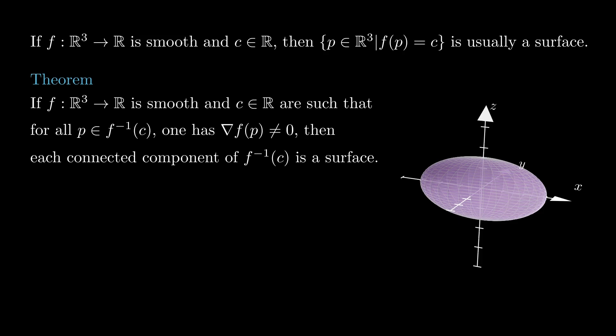then each connected component of the level set of f corresponding to c is a smooth surface. This theorem is basically a reformulation of the implicit function theorem in three variables.